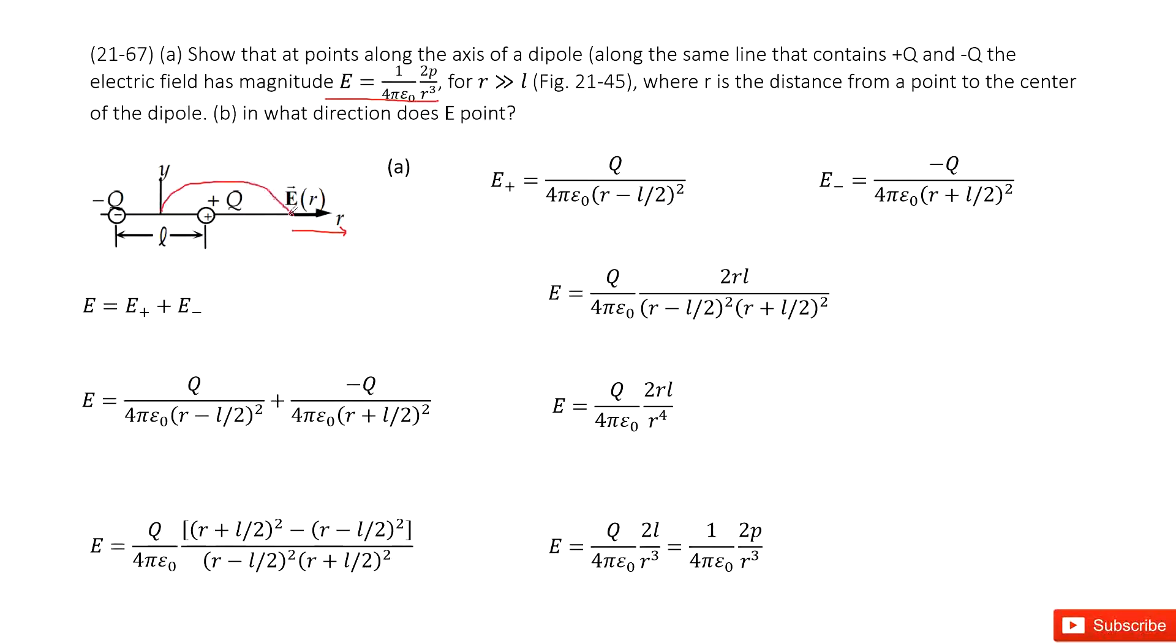You can see the distance between the origin to the location is r. And the distance between the origin to the charge is l over 2. So the distance between charge and location is r minus l over 2. So we can write down the magnitude for E plus.